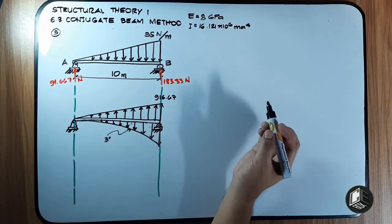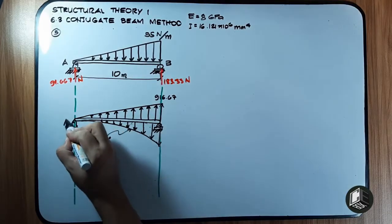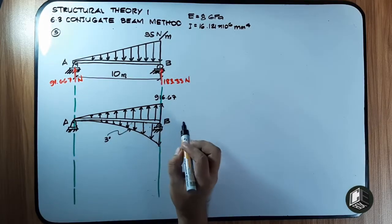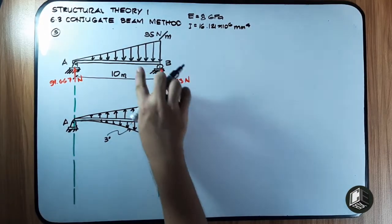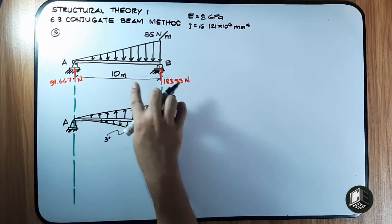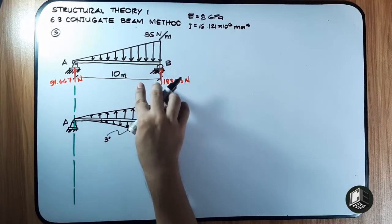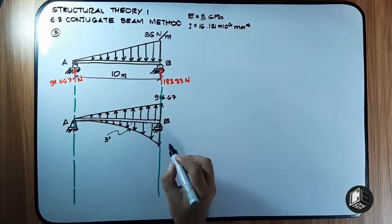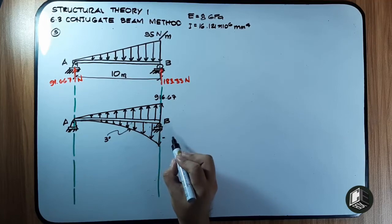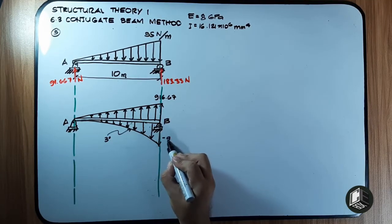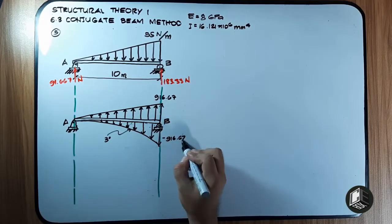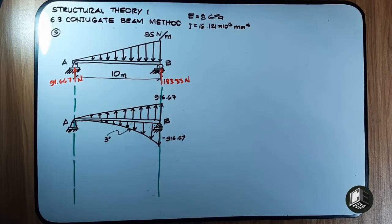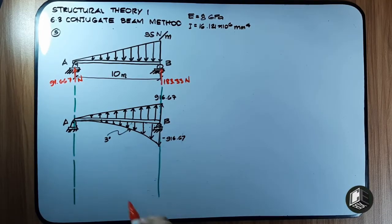This is a third-degree curve from A to B. The moment value: one-half of 55 multiplied by 10, multiplied by moment arm one-third of 10, which gives 916.67. This value is negative. Now let's isolate and solve for the reactions of the conjugate beam.